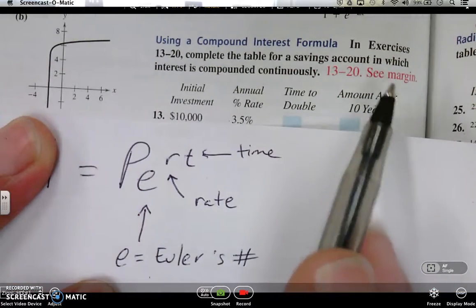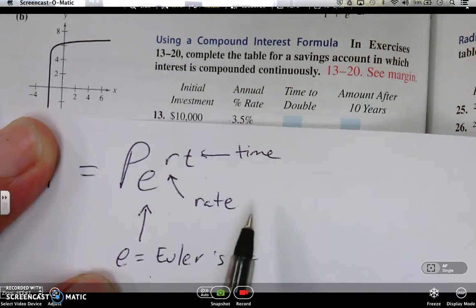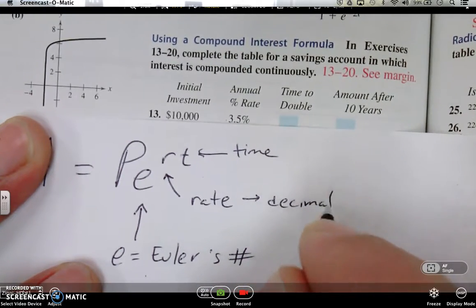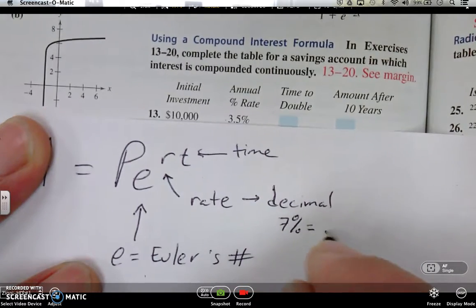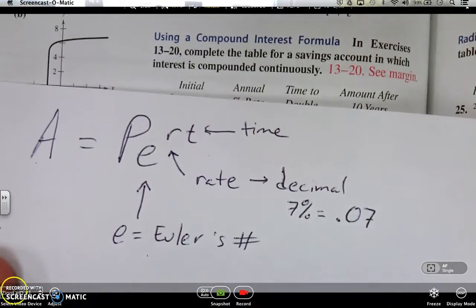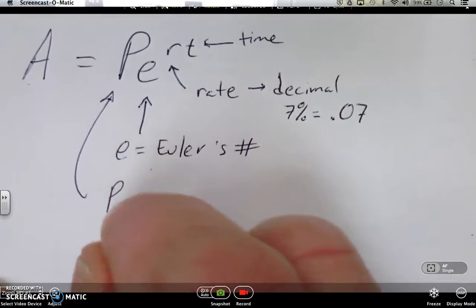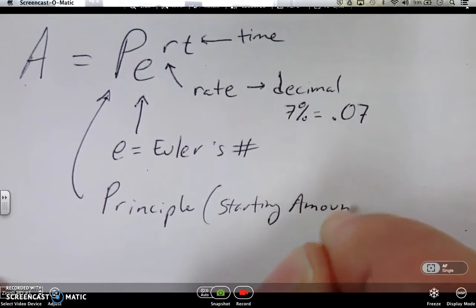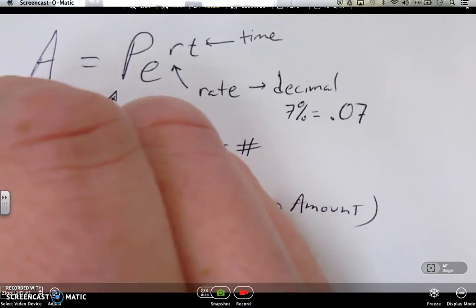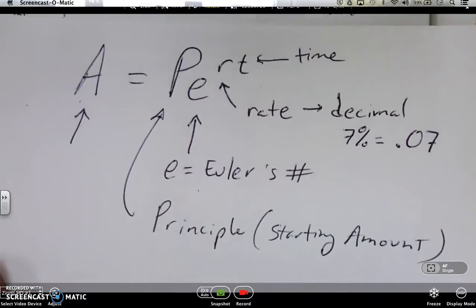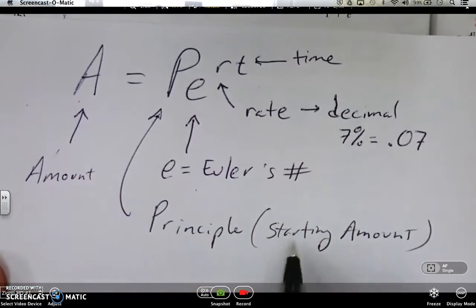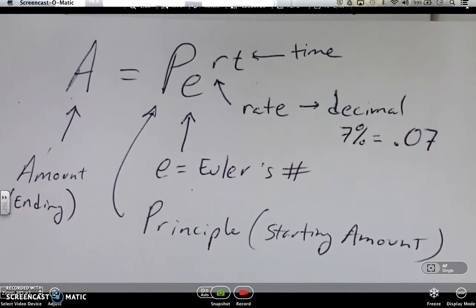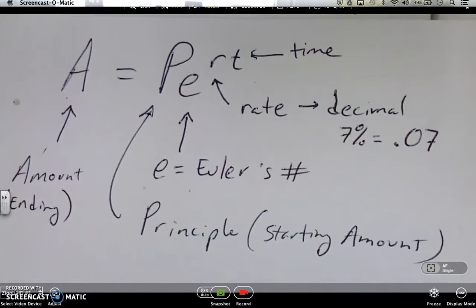R is for rate, t is for time. Now, the time and the rate, a couple things. This one is clearly in years. They're telling you that based on the problem statement. The rate will always be a decimal. What I mean by that is if they give you 7%, that's really .07 because that's what 7% is. So what's P? P is something called principal, which is also your starting amount. I honestly don't know why they call it principal. It's some sort of financial thing. Last thing. A is for the amount. Now, you're like, wait, I thought this was the amount. Well, this is the ending amount.